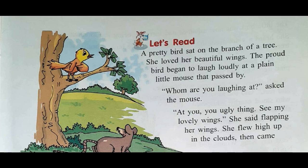'Whom are you laughing at?' asked the mouse. When the mouse saw the bird laughing, he asked at whom she was laughing. 'At you, you ugly thing. See my lovely wings,' the bird replied. She was laughing at that ugly-looking mouse and again started boasting about her beautiful and lovely wings.